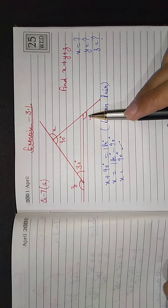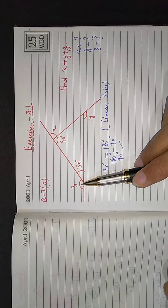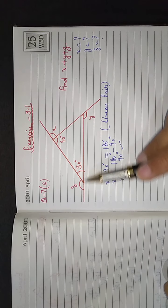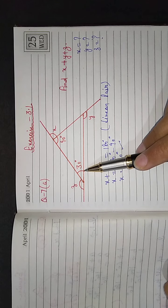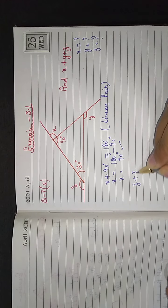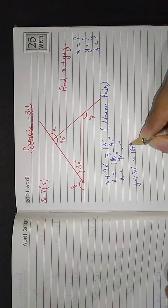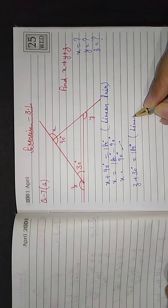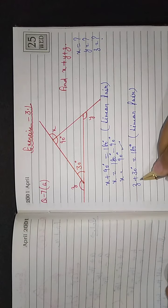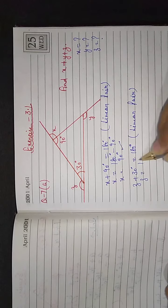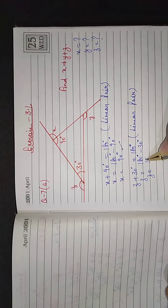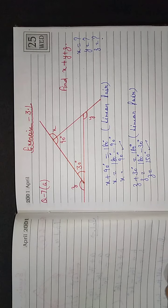Next, we go to z. I can see that z and 30 degrees are forming a linear pair, so their sum will also be equal to 180 degrees. So z plus 30 degrees equals 180 degrees — reason: linear pair. Transposing 30, we get z equals 180 minus 30, which is 150 degrees.